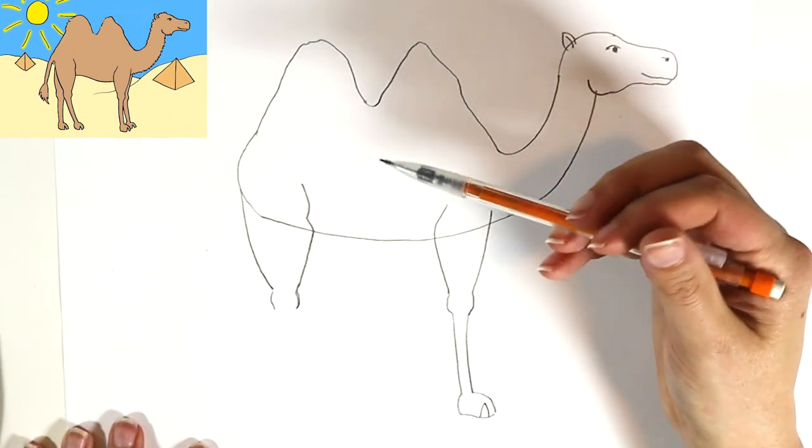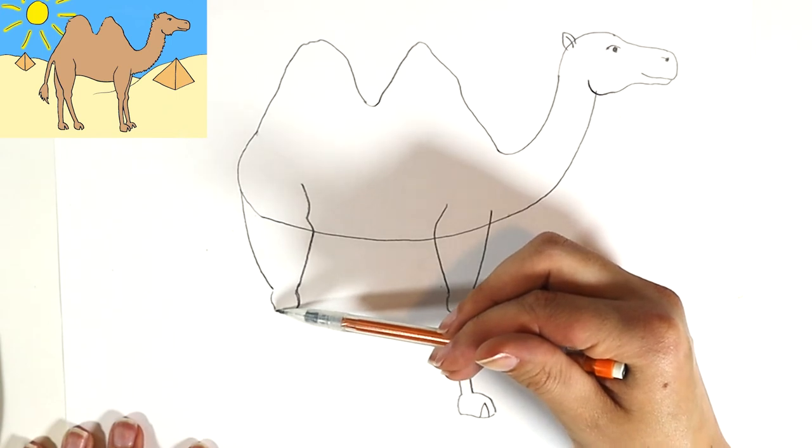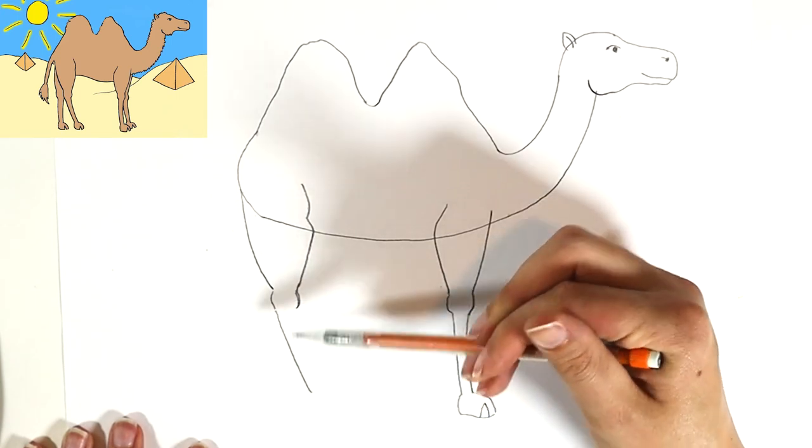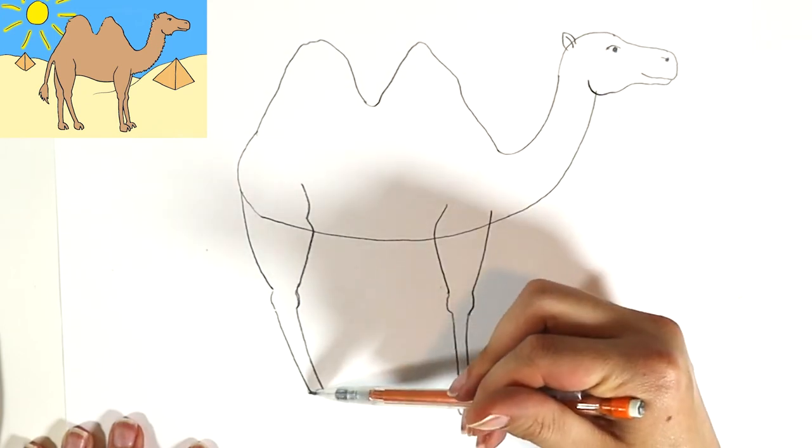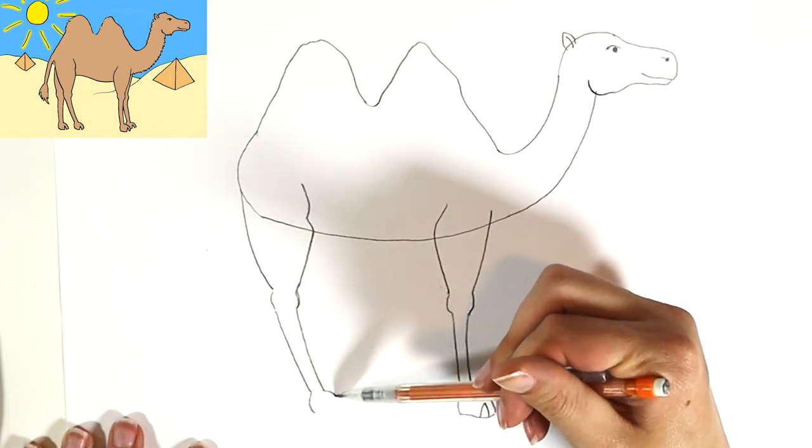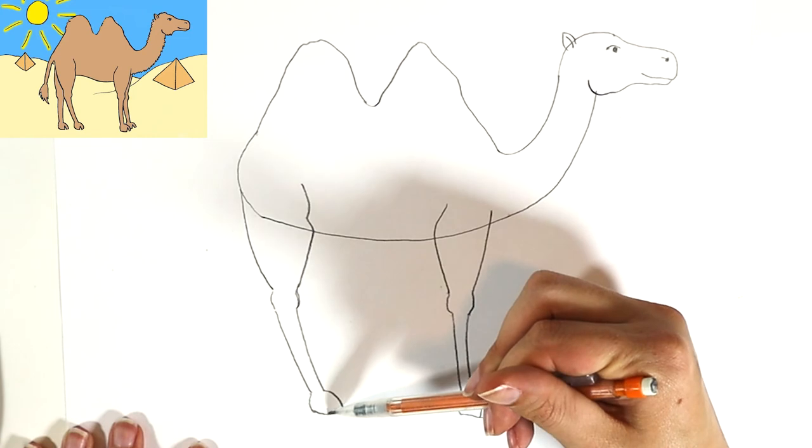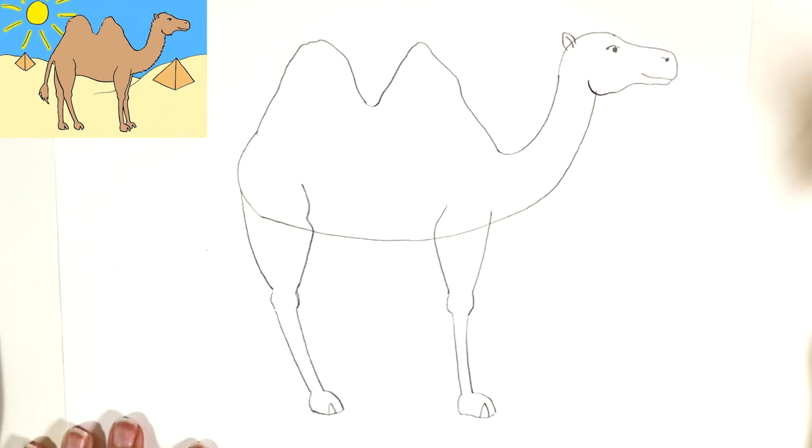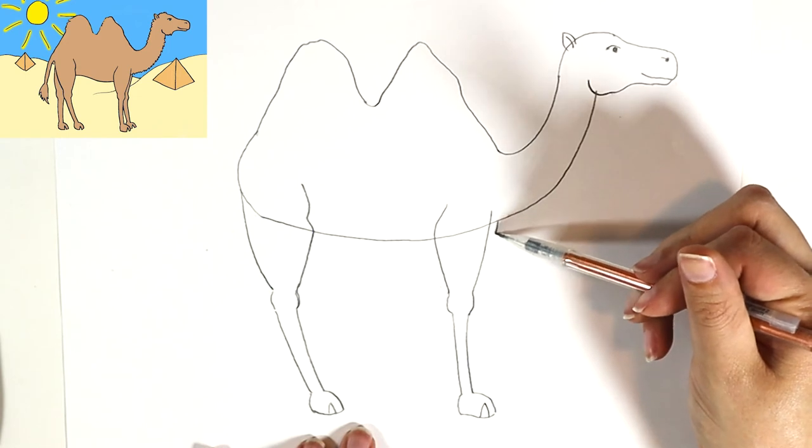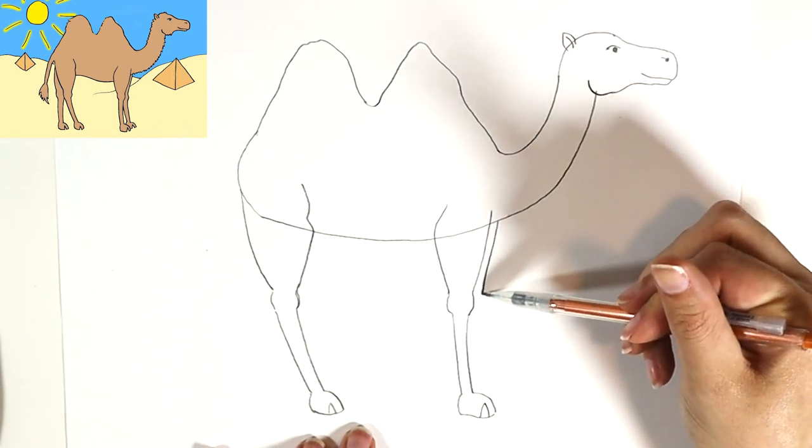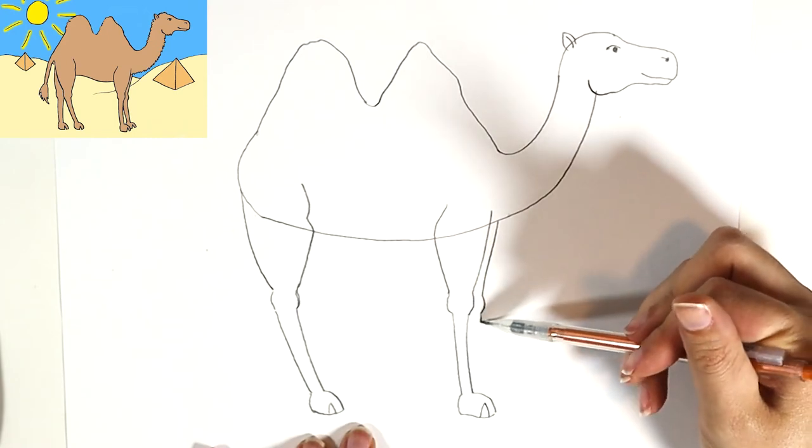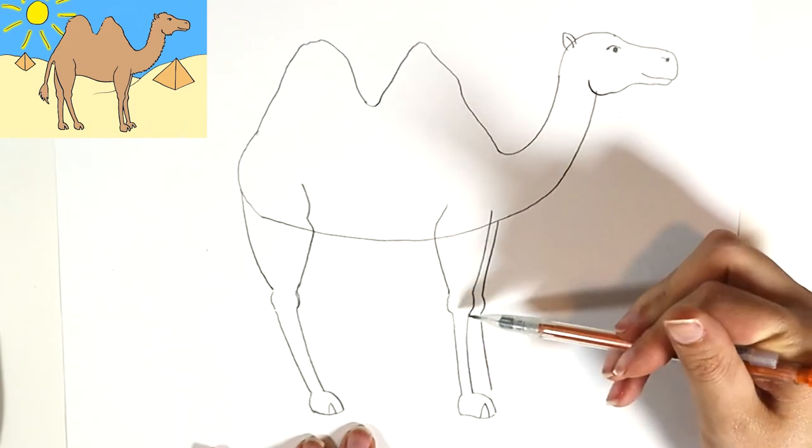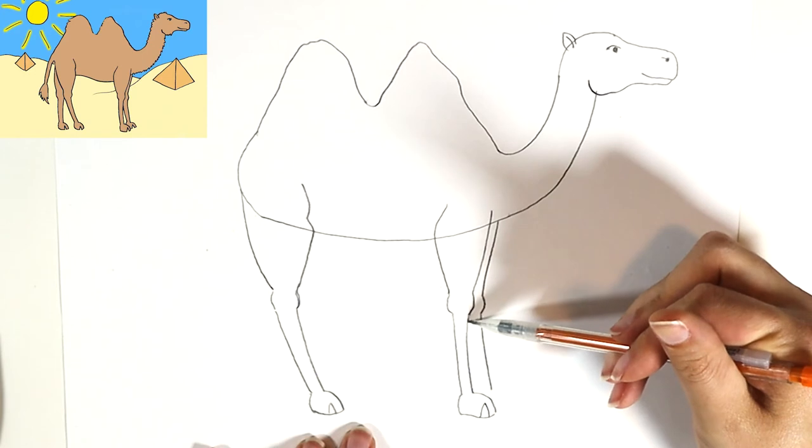And this foot I'm gonna have kind of angling forward a little bit more. And so I'm gonna do the other leg. I'm gonna start right next to this one, just kind of go down, a little knobby knee, and I'm gonna have this one angle a little bit different.